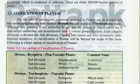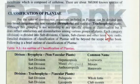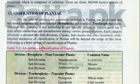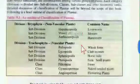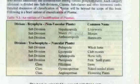Although this grouping is not according to any specific system of classification, it does reflect similarities and dissimilarities among various groups of plants. Each division is divided into subdivisions, classes, subclasses and other taxonomic ranks. Detailed discussion of classification of Plantae would be beyond the scope of this book, so only a brief outline is provided.